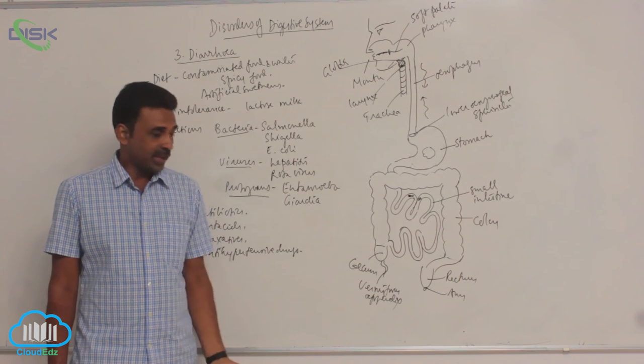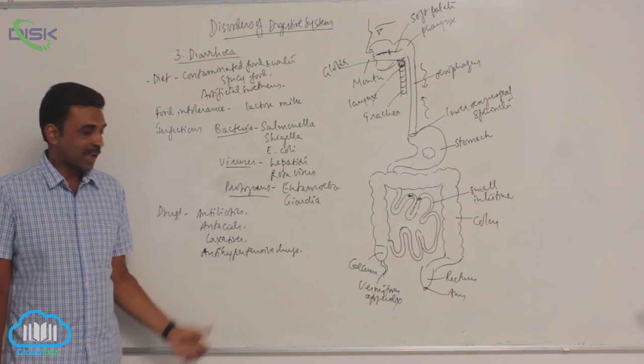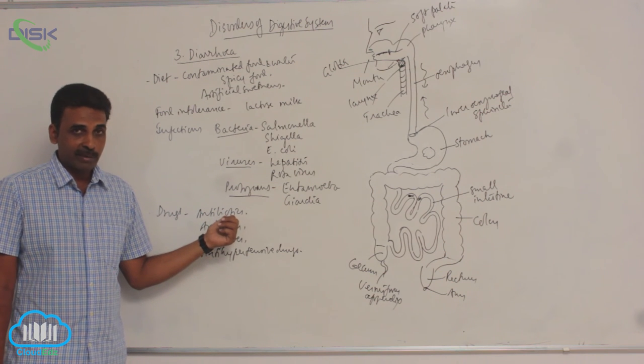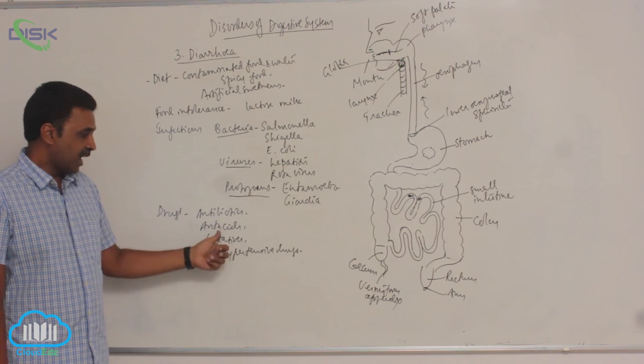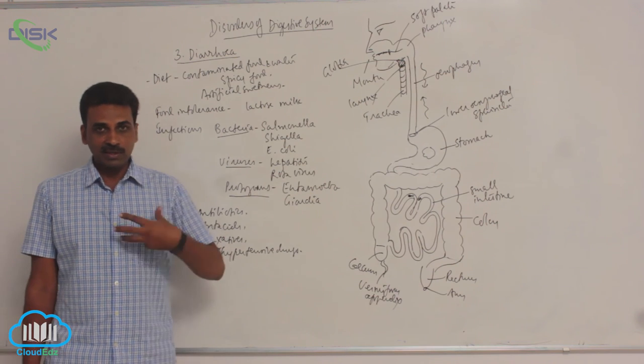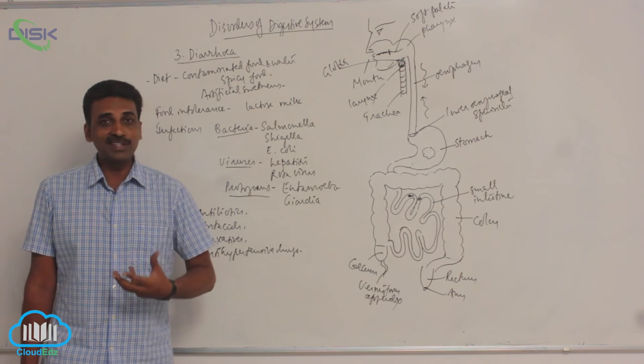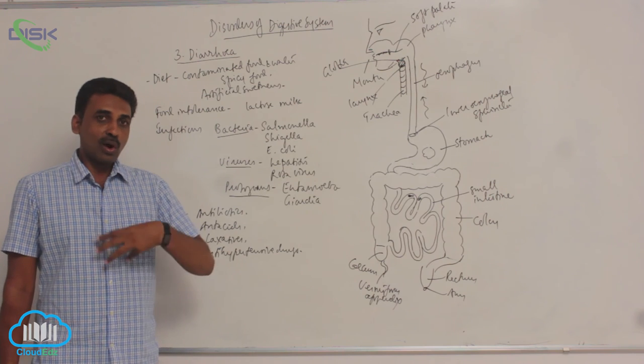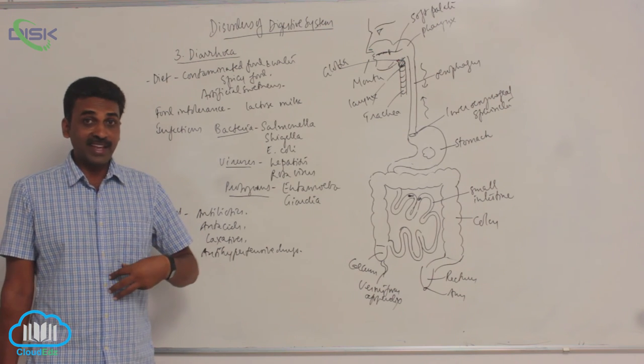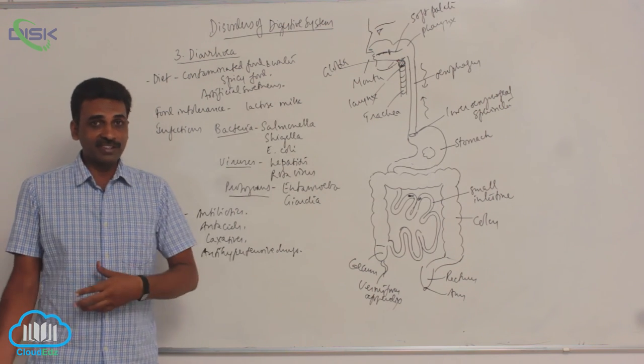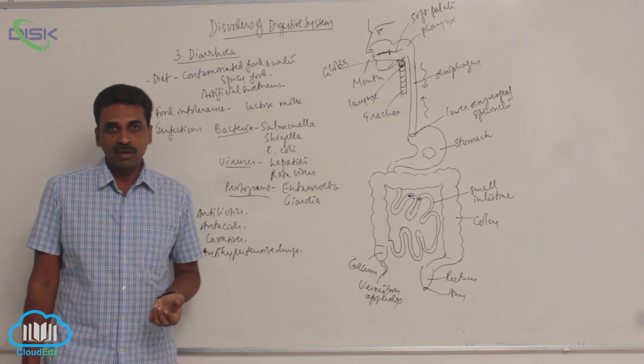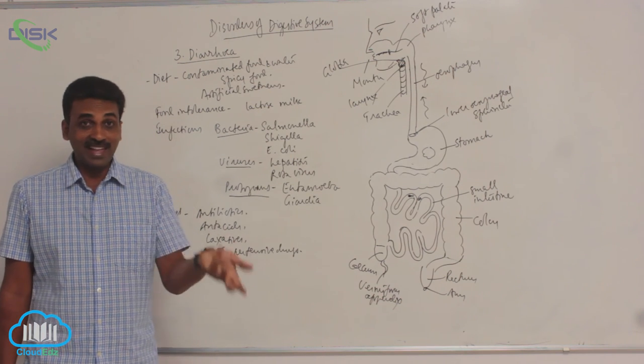And certain drugs: antibiotics we discussed might cause vomiting, it might also cause diarrhea. Antacids, in certain people more acid is produced when they take more spicy foods. So to counter that acid we take some antacids, but antacids, they got side effects, they produce diarrhea.